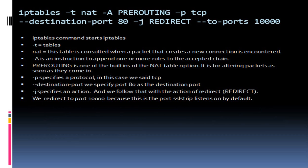One of the other things you saw me do was the iptables command. We turn on iptables and put in a simple rule: dash-T specifies the table — we're saying NAT here. Dash-A appends a rule to an accepted chain, so we're appending the pre-routing rule. We're specifying a protocol of TCP, specifying a destination port of 80, and then doing an action. Dash-J specifies the action — we're saying redirect that traffic to port 10,000. The reason we send it to port 10,000 is that's the port SSL strip listens on by default. With SSL strip, we could specify another port, but you'd have to specify that same port in your iptables rule.